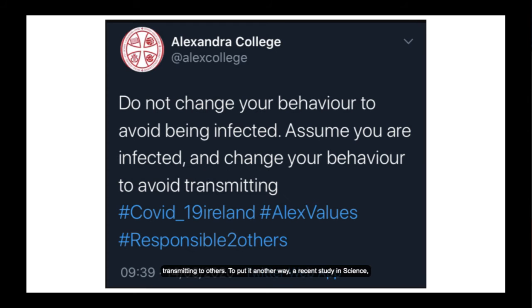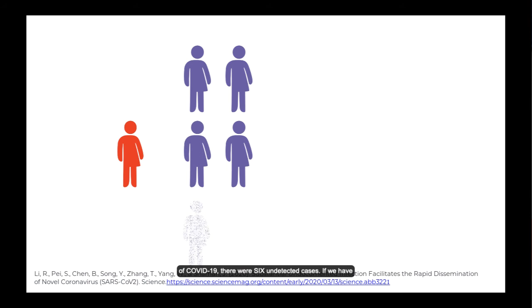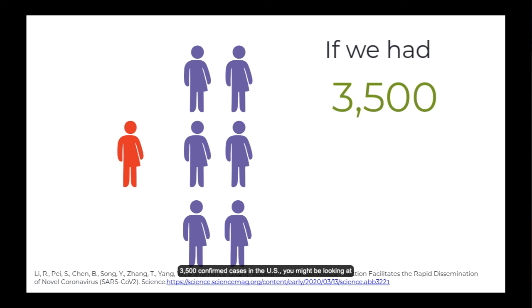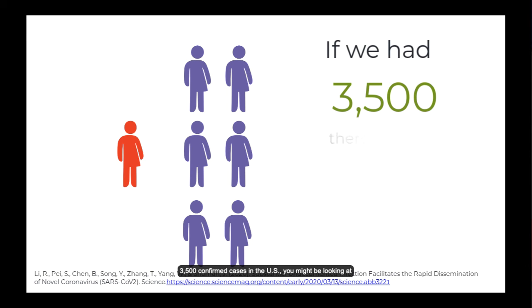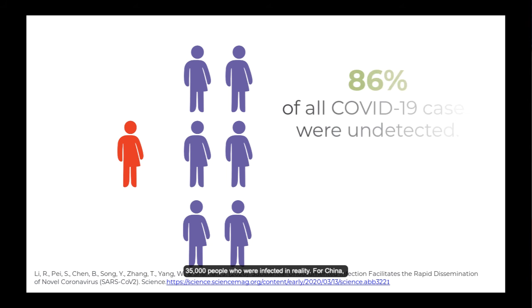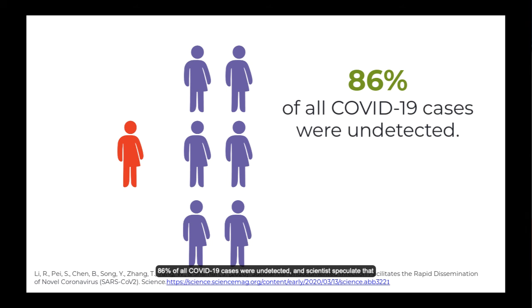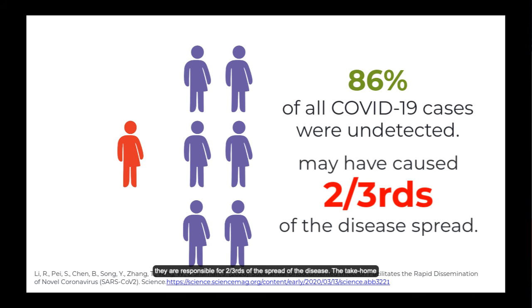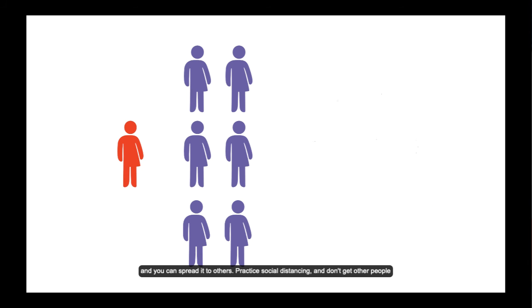To put it another way, a recent study in Science which looked at the Wuhan outbreak observed that for every confirmed case of COVID-19, there were 6 undetected cases. If we have 3,500 confirmed cases in the US, you might be looking at 35,000 people who were infected in reality. For China, 86% of all COVID-19 cases were undetected and scientists speculate that they are responsible for two-thirds of the spread of the disease. The take-home message: even if you don't feel sick, you could still have the disease and you can spread it to others. Practice social distancing and don't get other people sick.